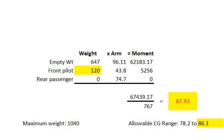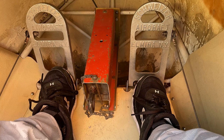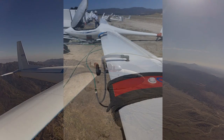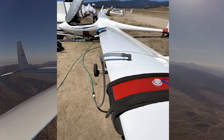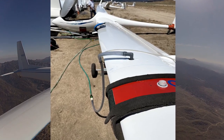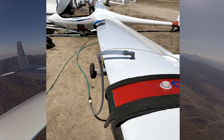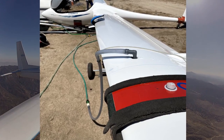Many times an extra ballast weight has to be added to bring the CG into the allowable range. Ballast might be a weight in a designated ballast holder or simply adding weight under the pilot's seat. Ballast may also be carried as water in the wings, fuselage, and tail. This type of ballast is usually added for the sole purpose of increasing the weight, often by several hundred pounds, in order to increase the cruise speed while maintaining glide ratio.